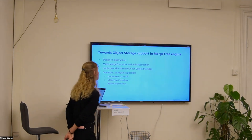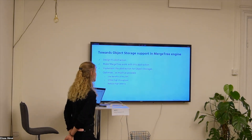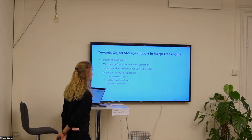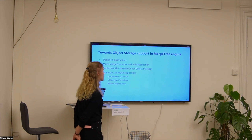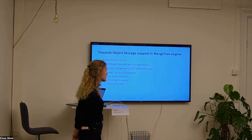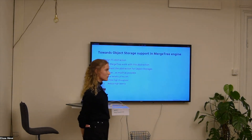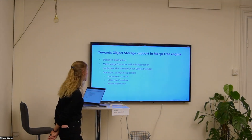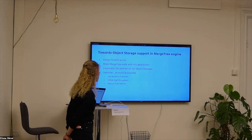So how do we use object storage in ClickHouse? We use it for MergeTree table engines, which is the most popular and most basic table engine in ClickHouse. What we did was design a filesystem abstraction, made MergeTree table engines work on top of this abstraction, then implemented the abstraction for the object storages. So all these object storages share the same implementation if they are compatible. Then we need to optimize read and write performance, specifically to utilize the high throughput of object storage and get rid of the main disadvantage — the high latency.